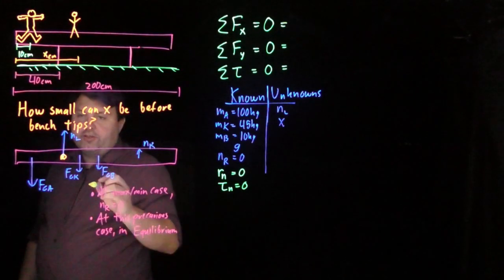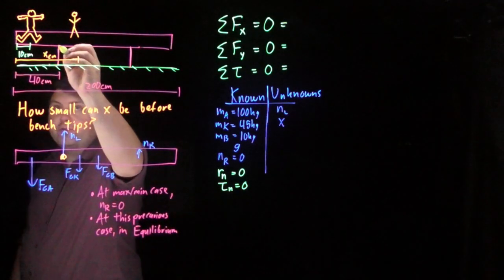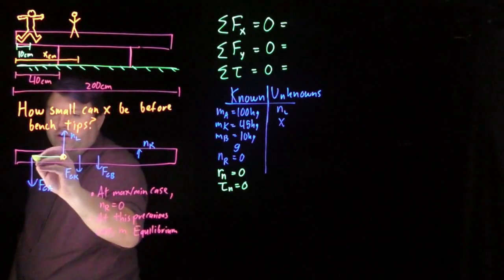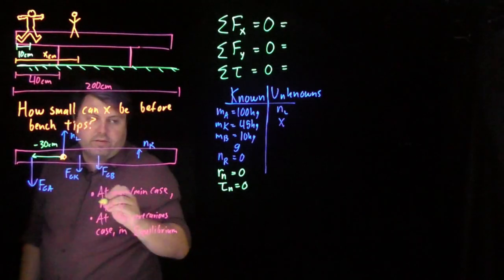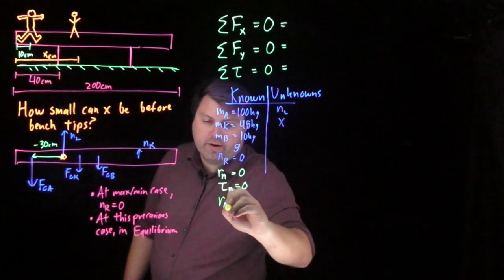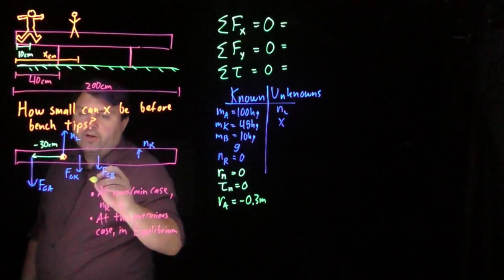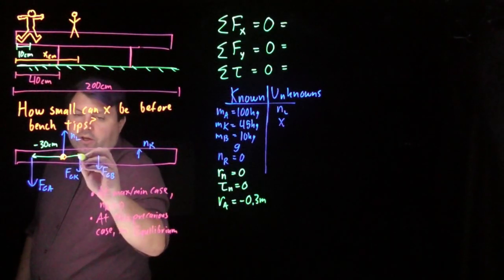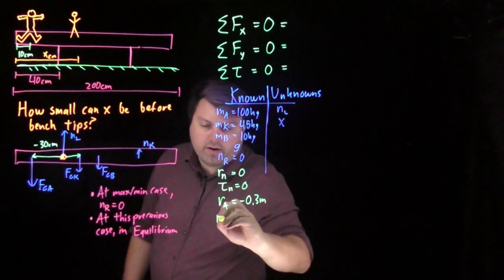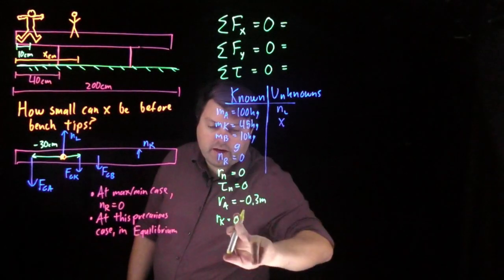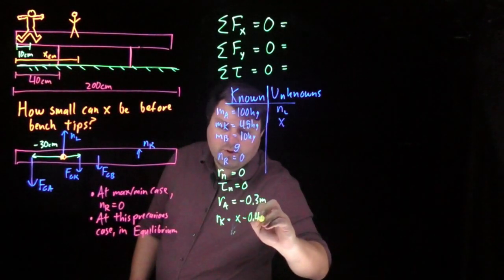As we go, then we can then just measure the distances from here to our individual forces, so from here to here. And this is negative 30 centimeters. So we have the r for a is negative 0.3 meters. We have for the kid all of x minus 40 centimeters. So we have r of k is x minus 0.4 meters.